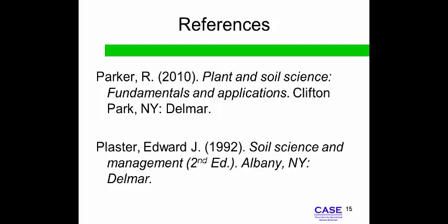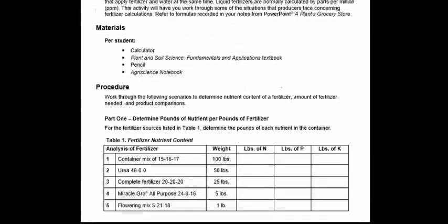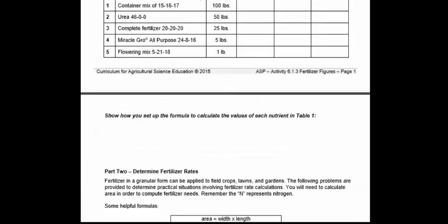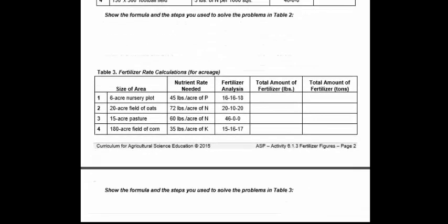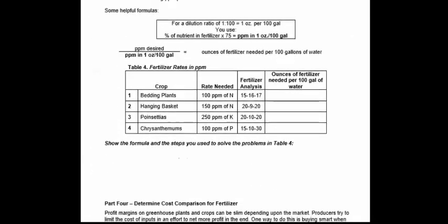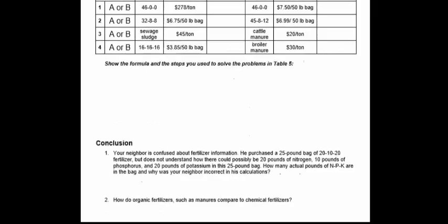As a review, mark or highlight three key points in your notes that are important to remember from this presentation. List two ideas or concepts that relate to previous knowledge. List any questions you have about this topic and discuss them with your instructor. Keep any notes from this presentation organized and available throughout the course. Through activity 6.1.3, Fertilizer Figures, you will use mathematical formulas to solve problems regarding fertilizer analysis, rates, and cost comparisons. You will understand that nutrients can be added to the soil in various ways to maximize economic and nutrient efficiencies. Your teacher will provide you with instructions for the calculations.